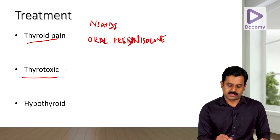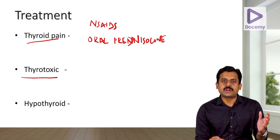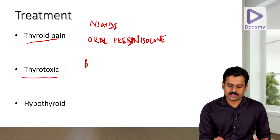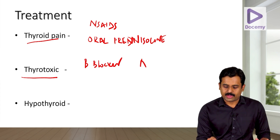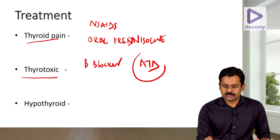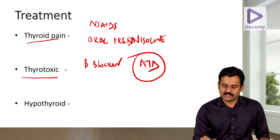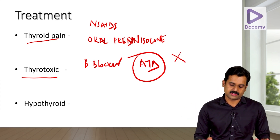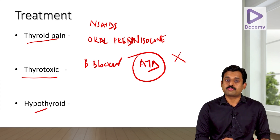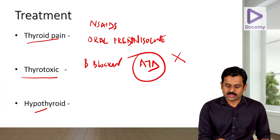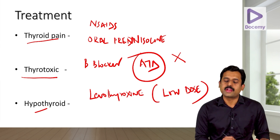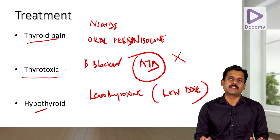In the destructive or hyperthyroid phase, to control symptoms of thyroid toxicity, start a beta blocker. Antithyroid drugs have no role in de Quervain's thyroiditis since this is a transient phase. In the hypothyroid phase, supplement with low-dose levothyroxine.